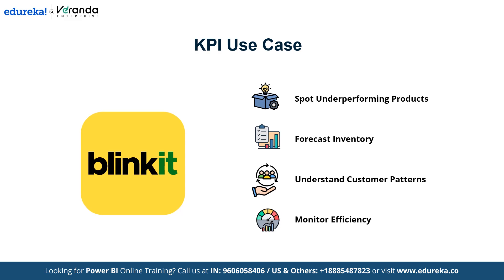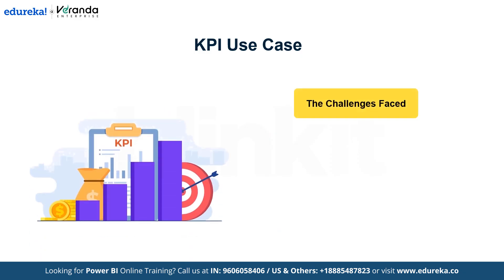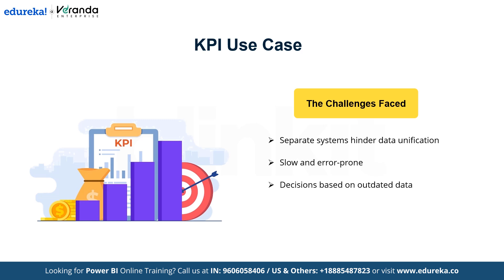Now let's move on to the challenges faced by Blinkit. The first challenge is data silos — different systems for sales, inventory, and customer feedback make it hard to unify data. Next is manual reporting, where generating reports manually is time-consuming and error-prone. Then there's a lack of real-time insights, as decisions are based on outdated or static data. Finally, scalability issues arise as analyzing data manually becomes impractical as the chain grows.